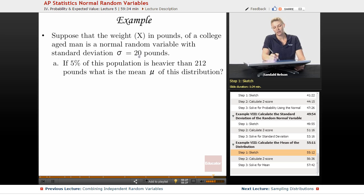So suppose that the weight in pounds of a college-aged man is a normal random variable with a standard deviation of σ = 20 pounds. If 5% of this population is heavier than 212 pounds, what is the mean μ of this distribution?